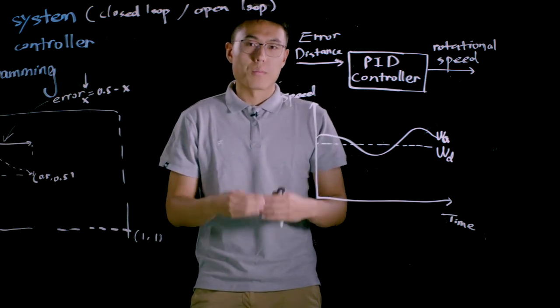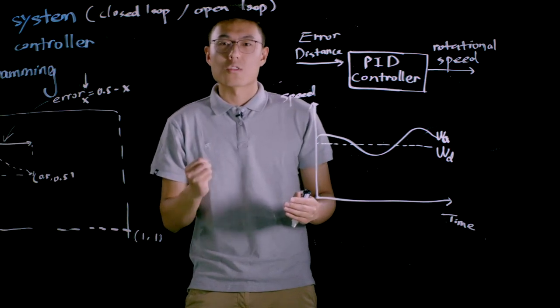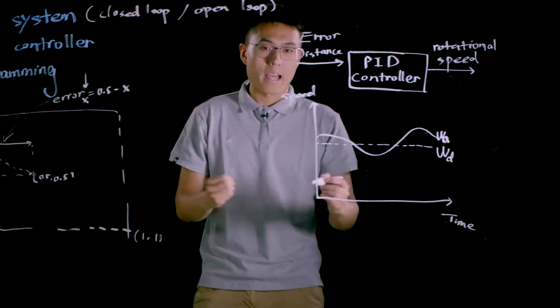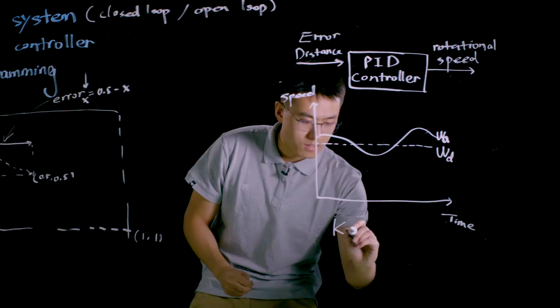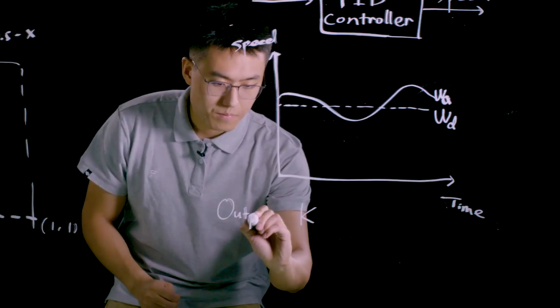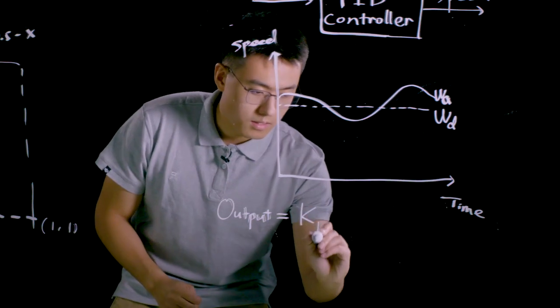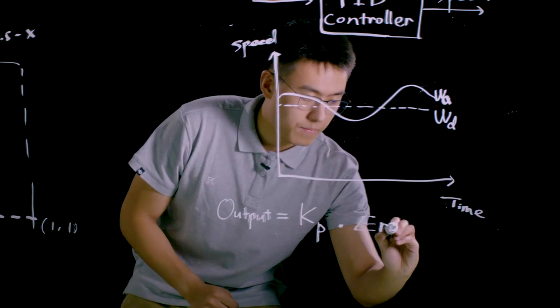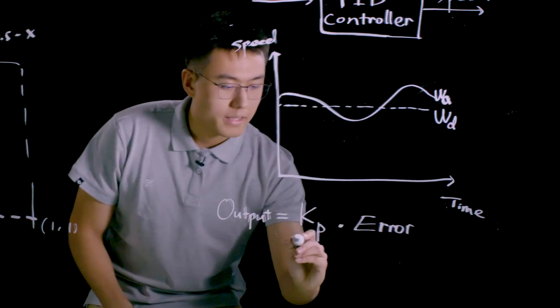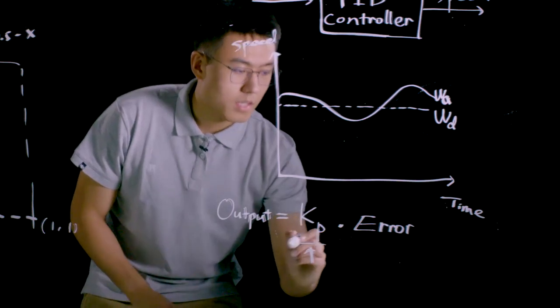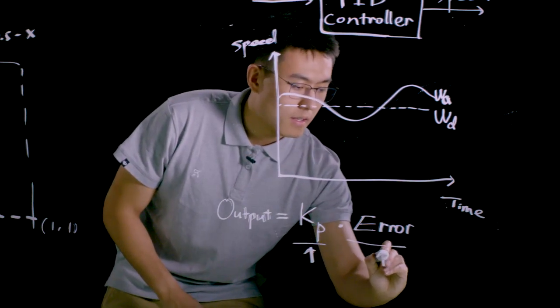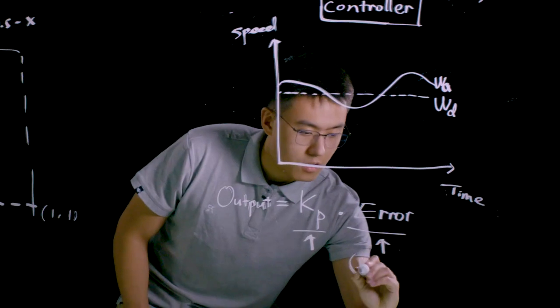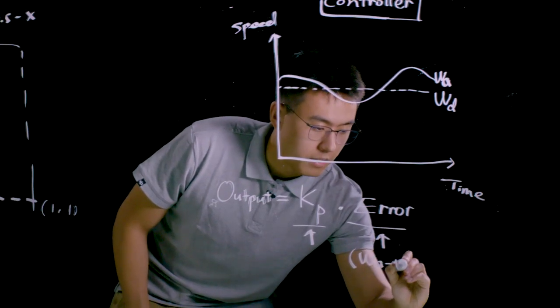P control or proportional control is one of the most frequently used control strategy in feedback control system. P denotes proportional and the output under this case is output equals to Kp times error. Here Kp is the scale coefficient and the error is the difference between the actual value and the target value. So in this case it's omega A minus omega D.